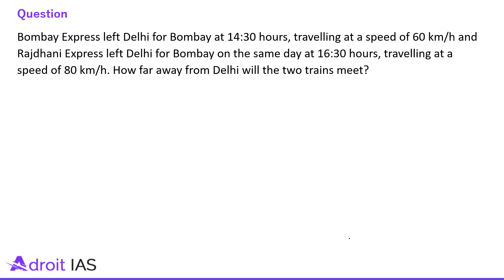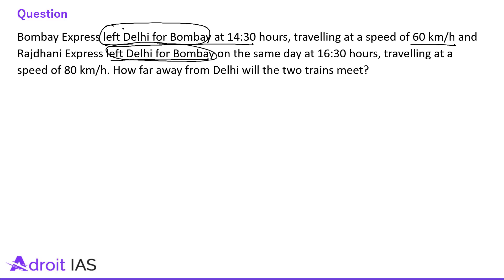Question 6: Bombay Express left Delhi for Bombay at 14:30 hours (2:30 PM), travelling at 60 km per hour. Rajdhani Express left Delhi for Bombay on the same day at 16:30 hours (4:30 PM), travelling at 80 km per hour. How far away from Delhi will the two trains meet?